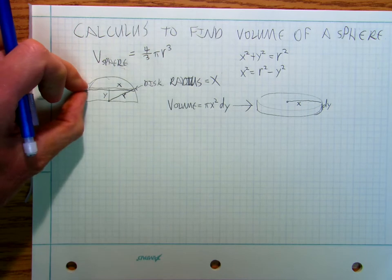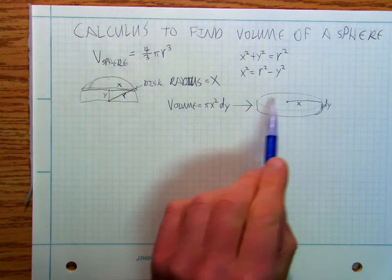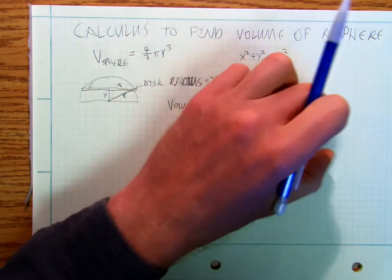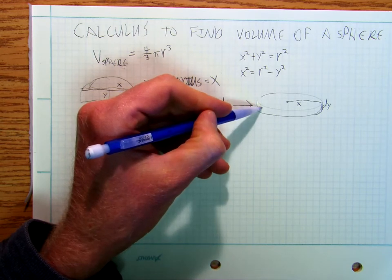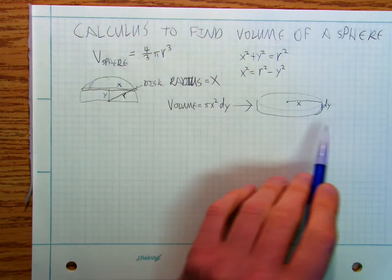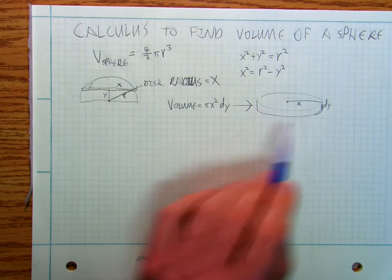So I've got a little disk moving up and down in that hemisphere. And it's got an area of Pi x squared. And it's got a width, the sort of the thickness of my coin is dy. And so all I have to do is, well there's my, there's the area of that disk.